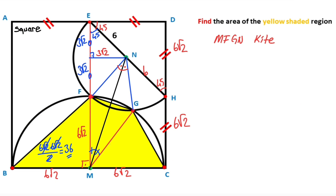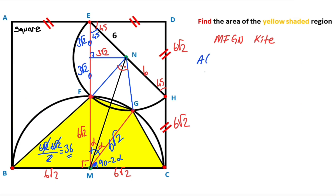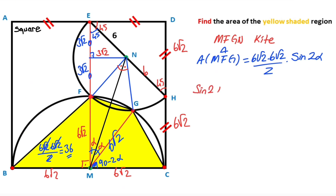And then if you focus on triangle FMG: this length is also 6√2 because of the radius. Let's call these three equal angles alpha, so here must be equal to 90 minus 2α. If you focus on triangle MFG, notice that the area of triangle MFG is equal to — using the sine formula — 6√2 × 6√2 / 2 × sin(2α).